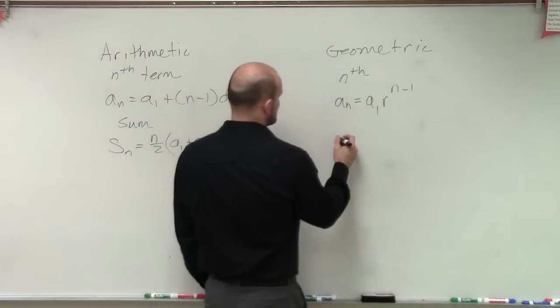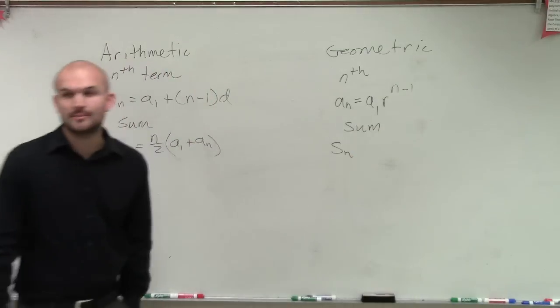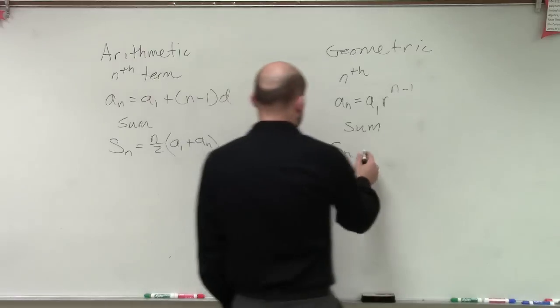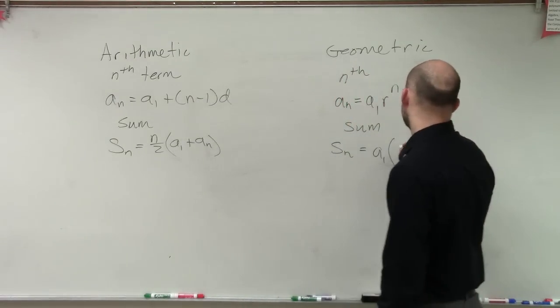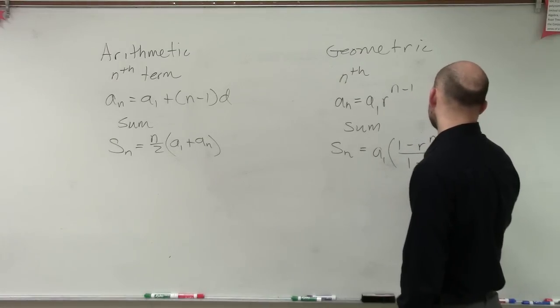Then, we look at partial sum. So, let's say I want to say, what is the partial sum of your geometric sequence? We're going to have a little bit different formula here. We're going to have a sub 1 times 1 minus r to the n divided by 1 minus r.